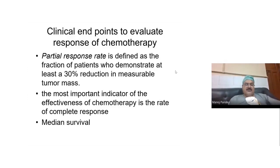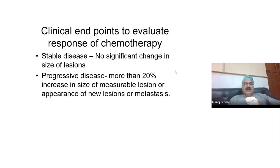If the tumor completely disappears, you call it a complete response. Patients where the response rate is higher or they have a complete response do better than those who partially respond to chemotherapy. Stable disease is when there is no change in the size of the lesion. If there is an increase of more than 20%, or if a new lesion or metastasis appears, you call it progressive disease.